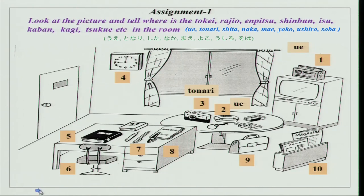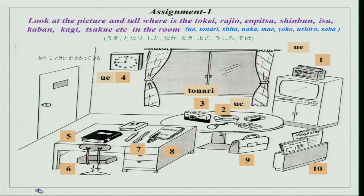Now we have the fourth one — tokei is on the wall. You can use ue, and you can also omit ue. Tokei wa kabe no ue ni arimasu. For the time being ue will work, but later on there is a proper verb for it. So tokei wa kabe ni arimasu. And then we have all the others as well. Ushiro is for isu — isu wa tsukue no ushiro ni arimasu.